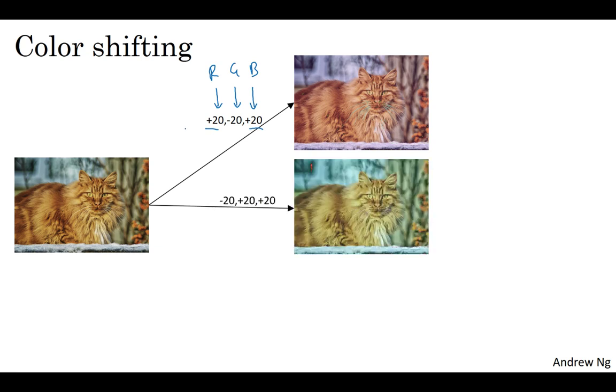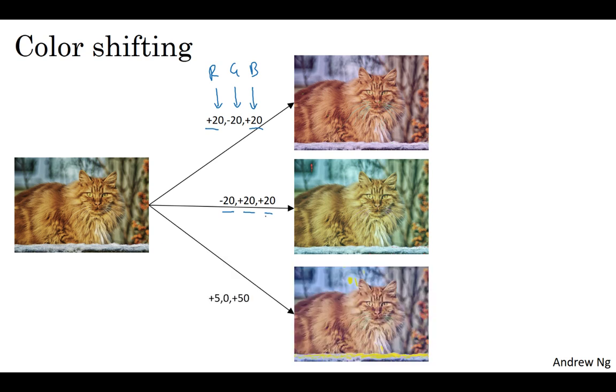What you do is take different values of R, G, and B, and use them to distort the color channels. So in the second example, we are making it less red, and more green, and more blue. So that turns the whole image a bit more yellowish. And here, we are making it much more blue, just a tiny little bit more red. But in practice, the values R, G, and B are drawn from some probability distribution.